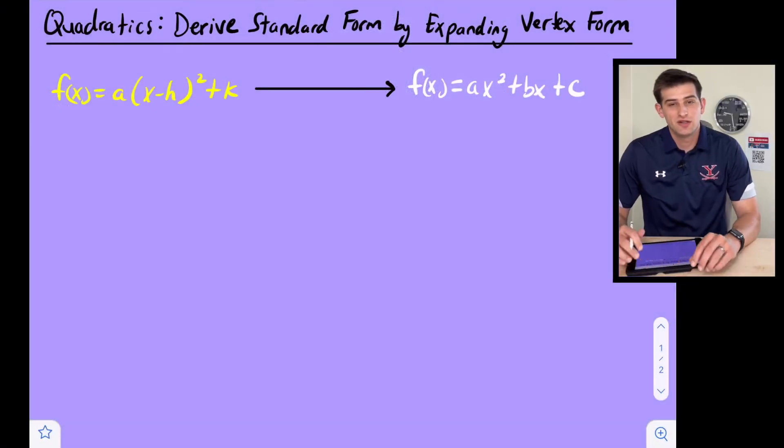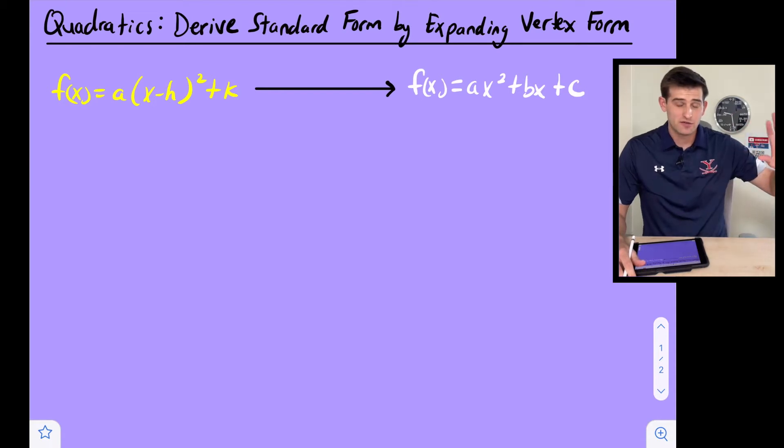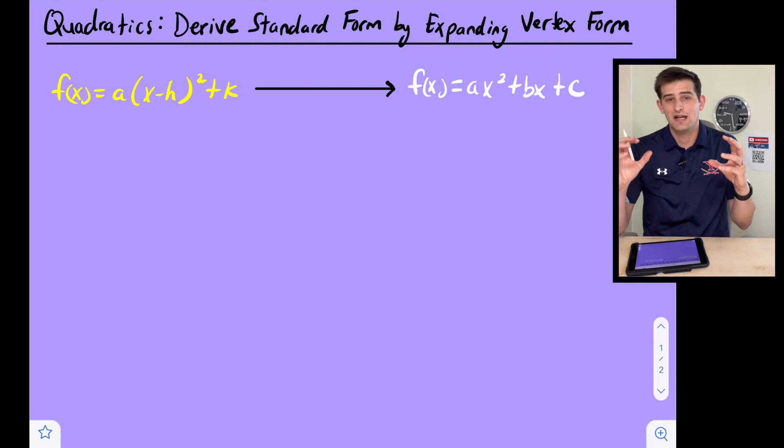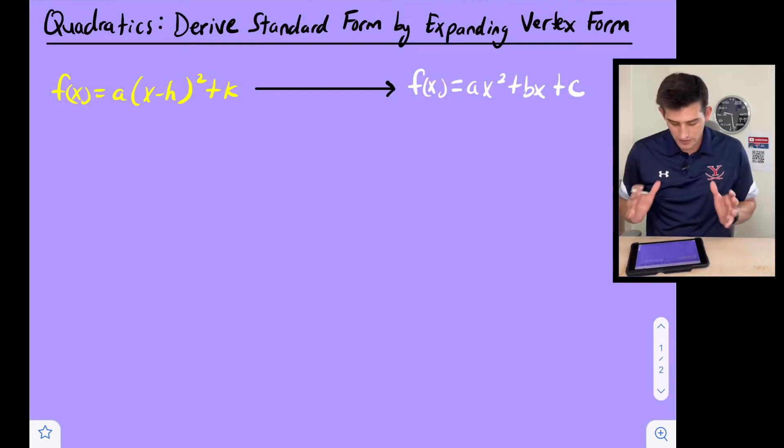Hello everybody, in this video we are going to talk about how to go from vertex form of a quadratic to standard form of a quadratic, and we're going to derive the standard form ax² + bx + c. So we're not going to be working with any numbers here; this is just a video where we come up with the standard form equation of a quadratic from a vertex form.